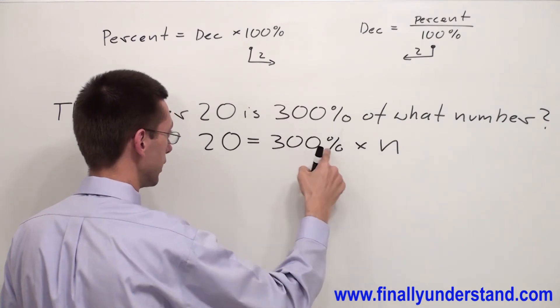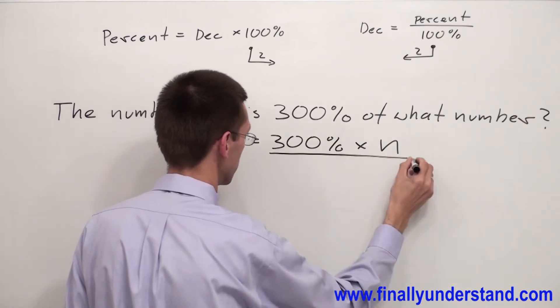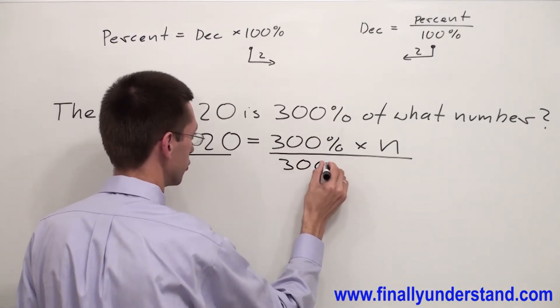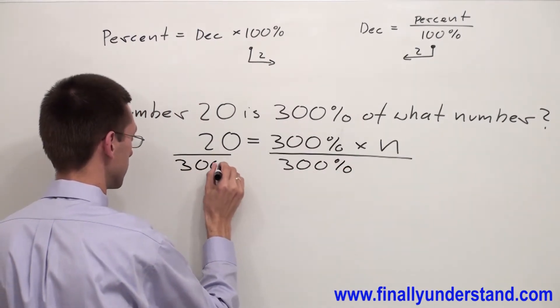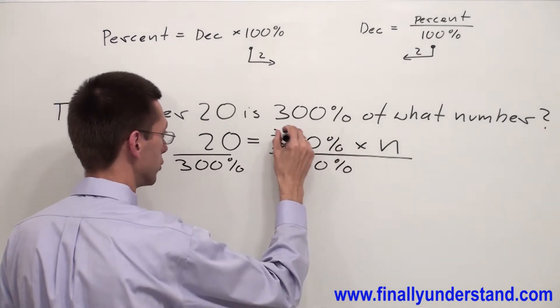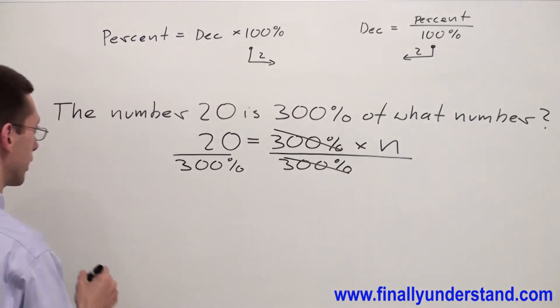In order to isolate n, I have to divide both sides of the equation by 300%. Why? Because I have multiplication here. 300% and 300% will cancel out, and I'm going to have n equals 20 divided by 300%.